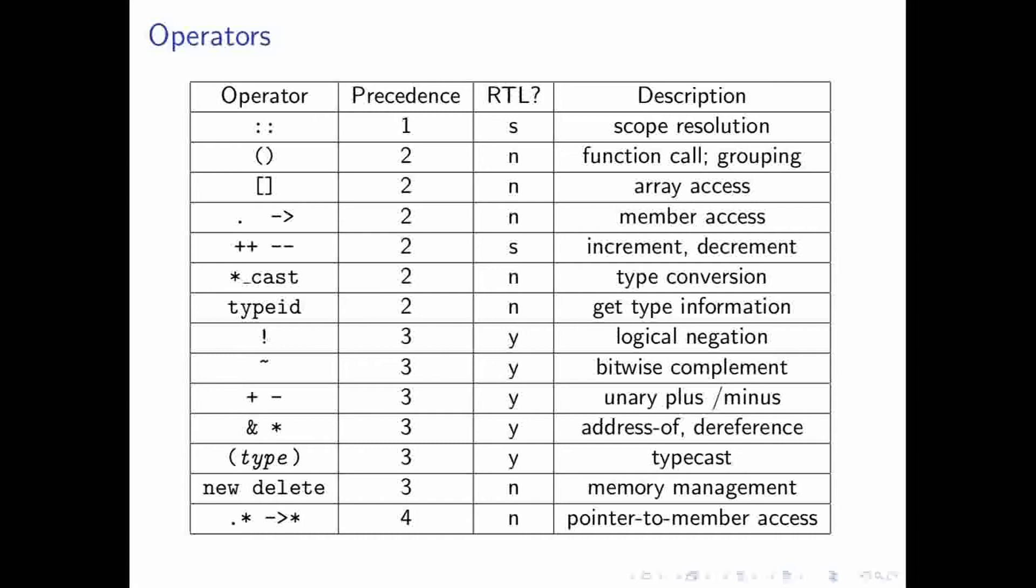Operators in C++ actually don't follow the associativity rule. They instead have something called left or right associativity. And this basically determines the order in which the operands are processed. And so, the majority of operators in C++ are left associative. There are a few, like, for instance, this bang operator here that have right associativity.